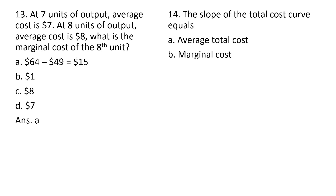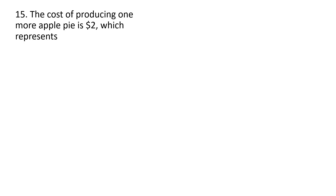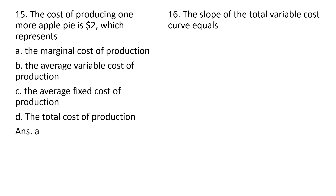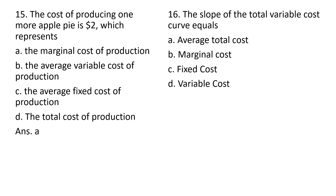Question 14. The slope of the total cost curve equals — B, marginal cost. Question 15. The cost of producing one more apple pie is $2, which represents — A, the marginal cost of production. That is correct, answer choice A. Question 16. The slope of the total variable cost curve equals marginal cost, answer choice B. So the slope of the total cost curve is marginal cost, and the slope of the total variable cost curve is also marginal cost.